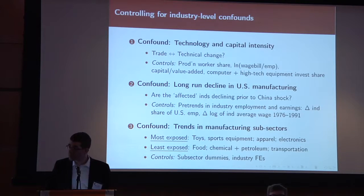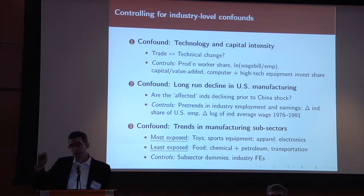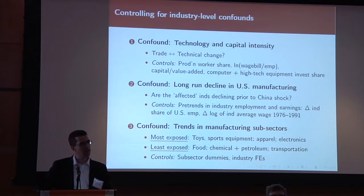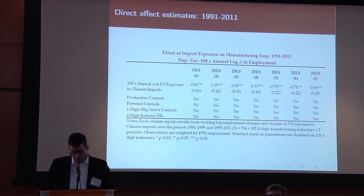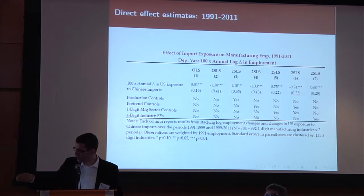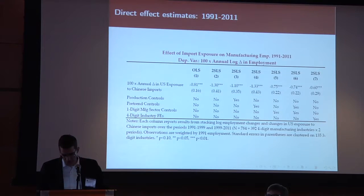We also control in some specifications for past changes in employment and wages in those industries to make sure we're not just capturing a long-standing decline. And we try to compare subsets of industries that are more similar. What we get out of all these operations are values showing that a 1% increase in trade imports from China in an industry is associated with an about slightly larger than one log point — about 1% decline — in employment in that competing US industry.